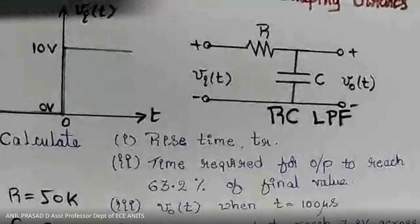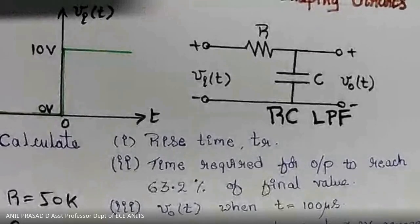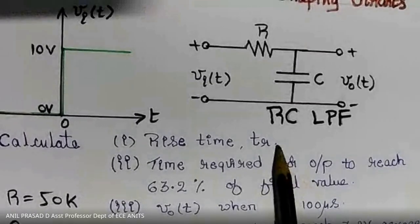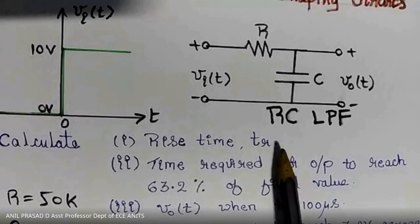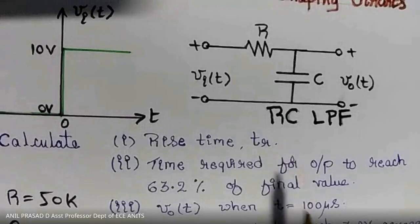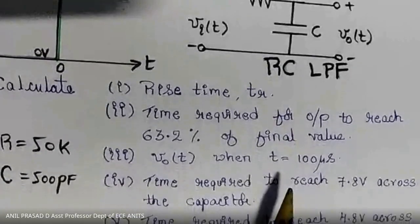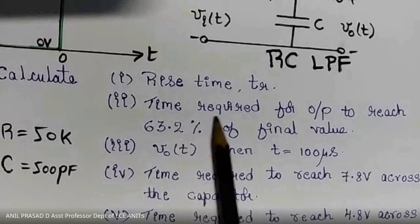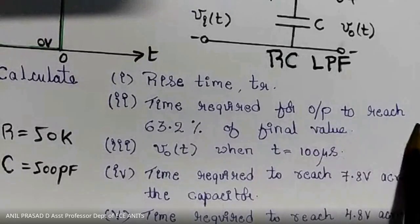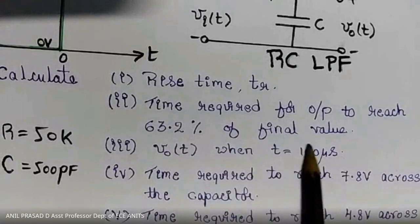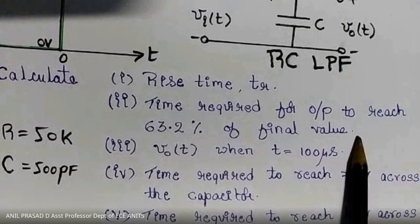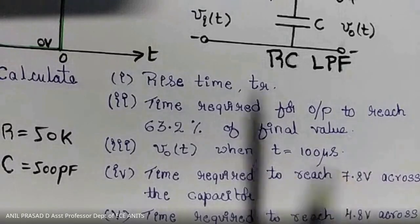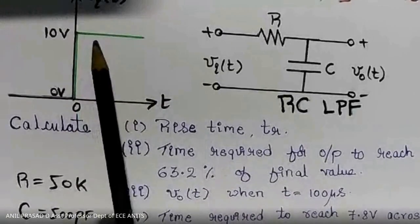Question one is to find the rise time T_r. Rise time is given by the expression 2.2 times tau, where tau is the time constant of the circuit. Question two is to find the time required for the output to reach 63.2 percent of the final value.